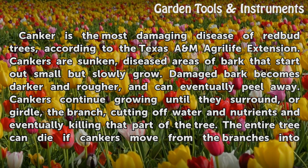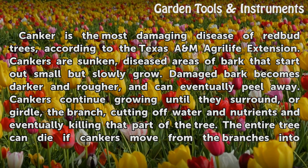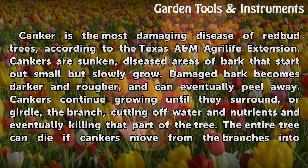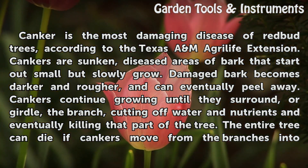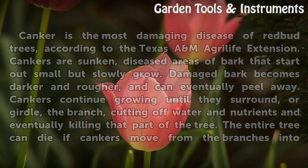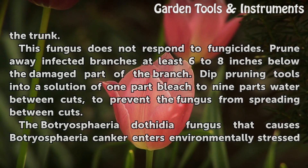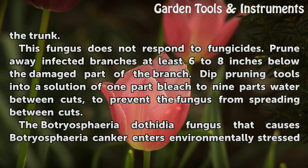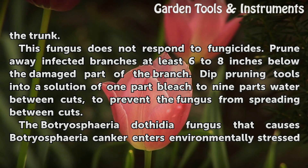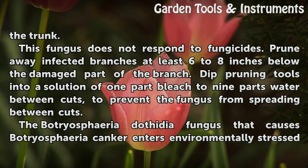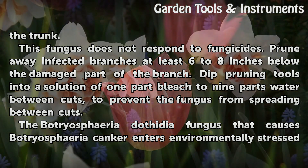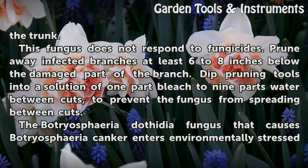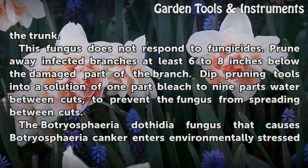Cankers continue growing until they surround, or girdle, the branch, cutting off water and nutrients and eventually killing that part of the tree. The entire tree can die if cankers move from the branches into the trunk. This fungus does not respond to fungicides. Prune away infected branches at least 6 to 8 inches below the damaged part of the branch. Dip pruning tools into a solution of one part bleach to 9 parts water between cuts to prevent the fungus from spreading.